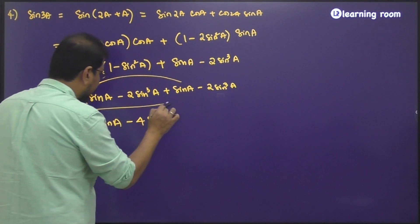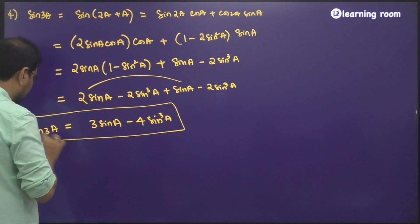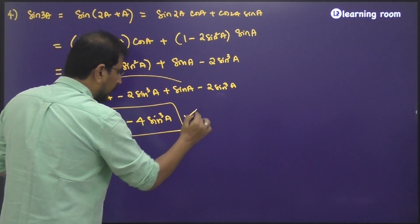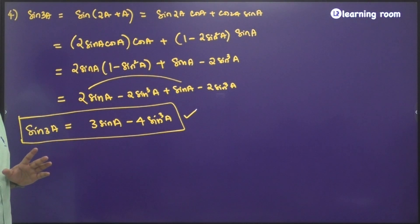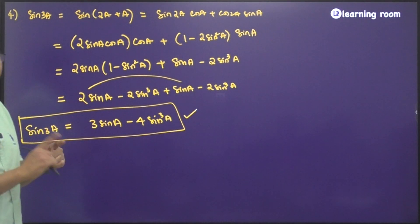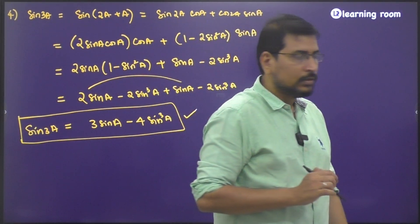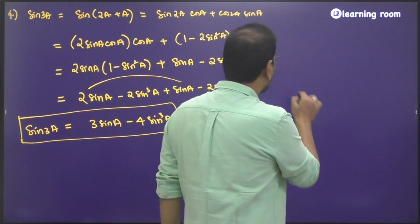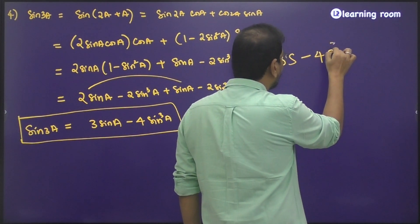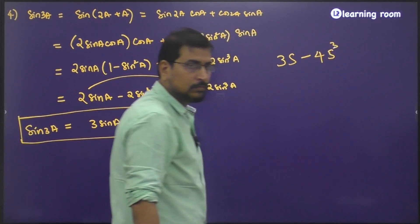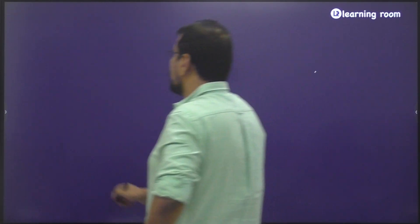There is only one expression for sin 3a, and it is expected to be remembered. It is 3 sin a minus 4 sin cube a. You can remember it like: 3s minus 4s cube.